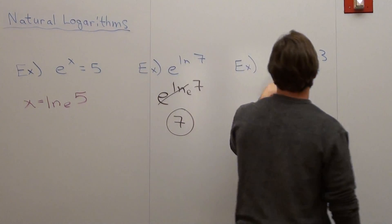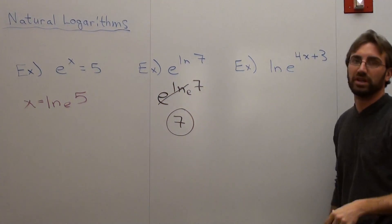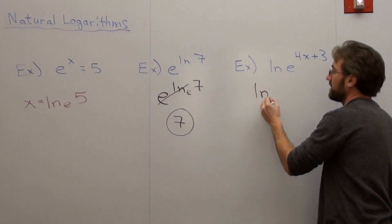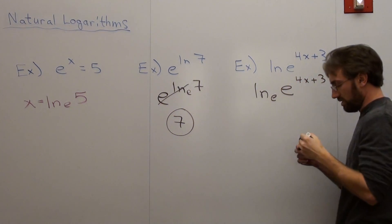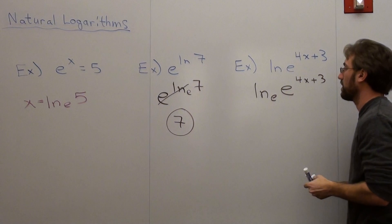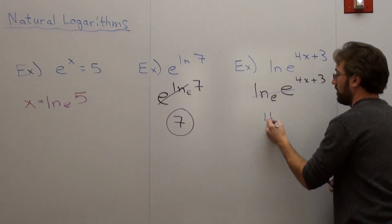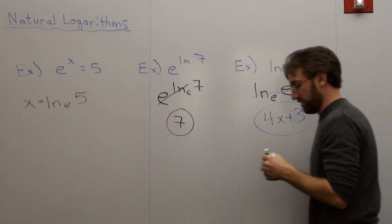And in this case, you've got natural log of e to the 4x plus 3. Well, it's the same thing. The base is automatically e of e, 4x plus 3. 4x plus 3 is your answer.